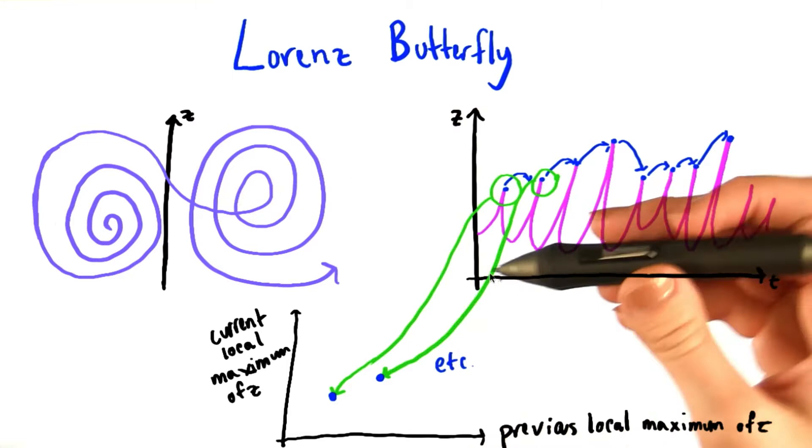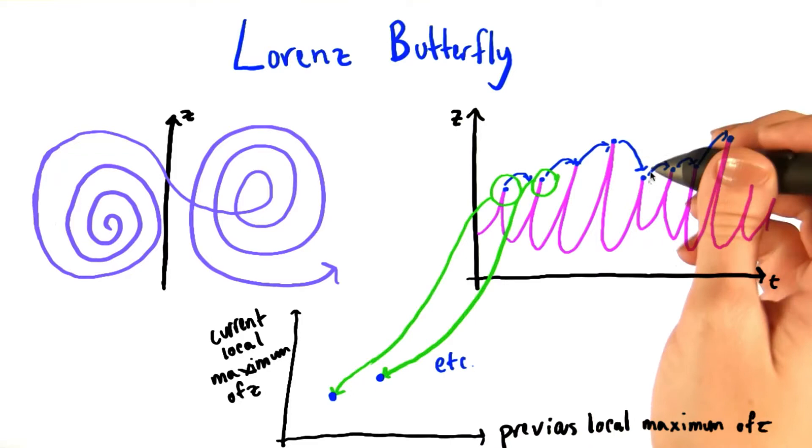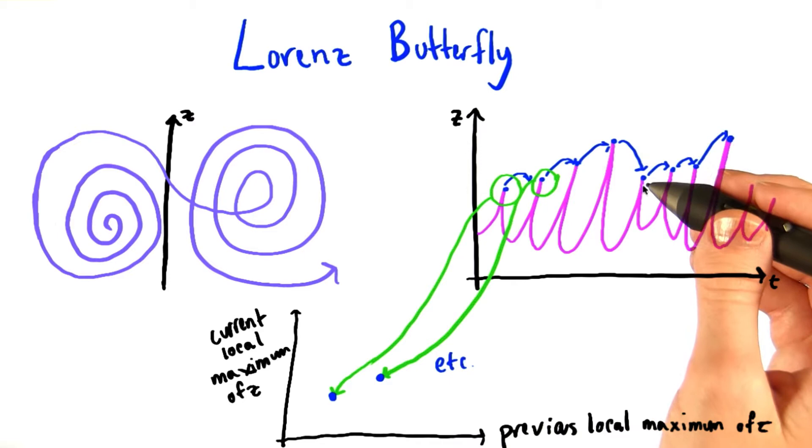We can plot how z, this coordinate, varies as a function of time. And when we do this, we see a series of peaks that ascend, and then descend, and then re-ascend, and so on and so forth. This set of peaks of increasing height corresponds to spiraling outward along one wing. And then as we jump down to a local minimum, the stepping upward again over here corresponds to the spiraling outward along this wing.